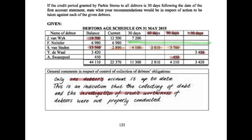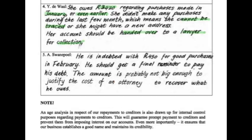Our last debtor is Eswanapu, in a similar situation to Y Deval. The key difference is that Y Deval owes us $3,420, whereas Eswanapu only owes us $450 for goods purchased in February. He's also possibly missing or not coming forward to pay. We should send him a final reminder; however, the amount is probably not big enough to justify the cost of an attorney to recover what he owes us, so we will keep sending reminders rather than handing him over to attorneys.